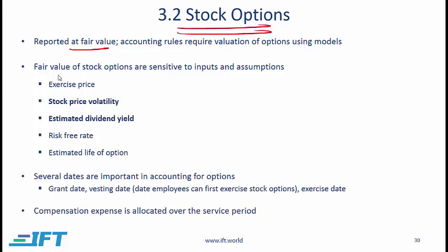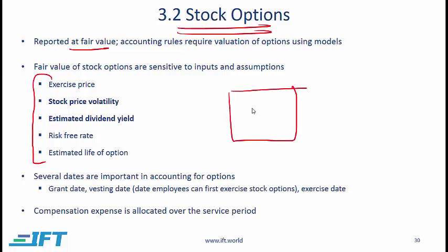You will see this in detail when you study derivatives, but at a basic level there are several variables that impact option prices, and those variables are shown here. Since we are generally dealing with call options, we have an option pricing model with various inputs that produce an option price. Of these inputs, the only one that is completely objective is the exercise price — for example, an employee might get options with a strike price of 25. With the other variables, there is some subjectivity.